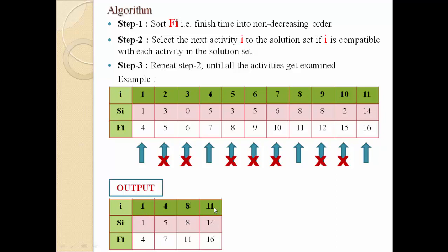All activities have been examined. The final solution set contains 4 compatible activities: a1, a4, a8, and a11. These are all mutually compatible, and this is the solution obtained using the greedy method.